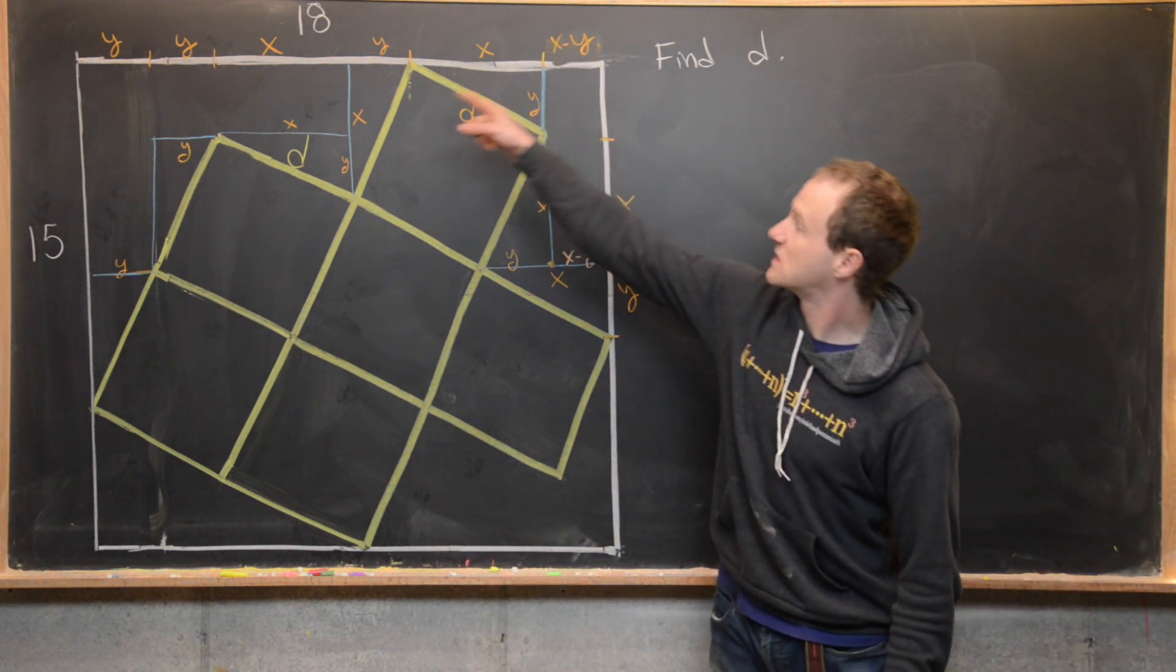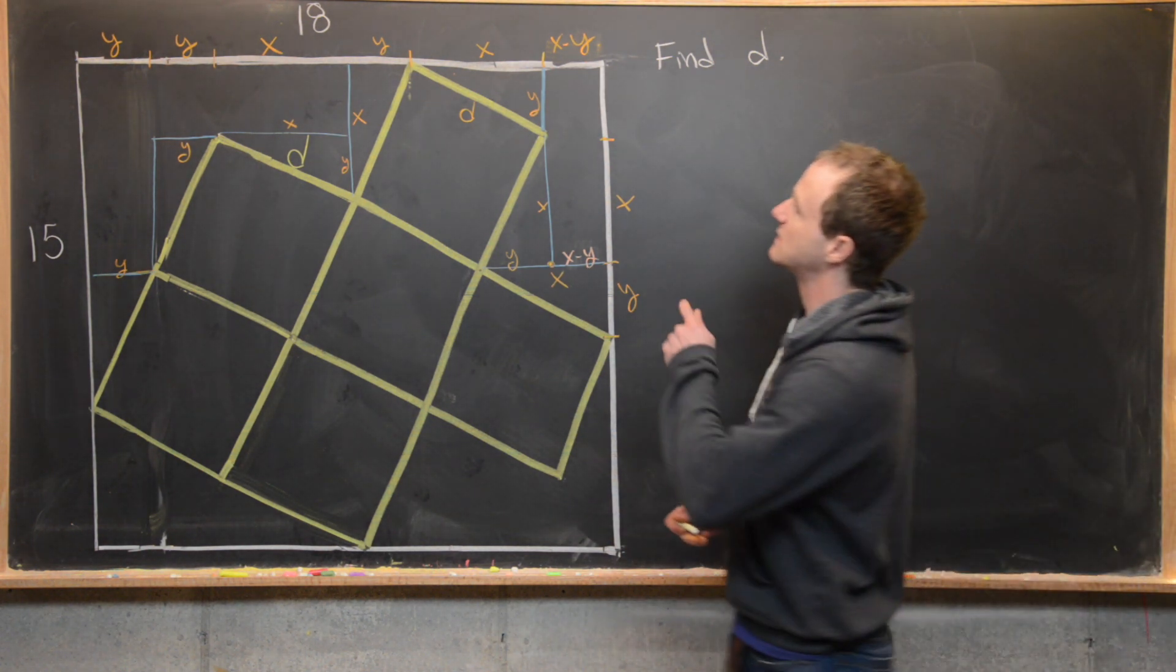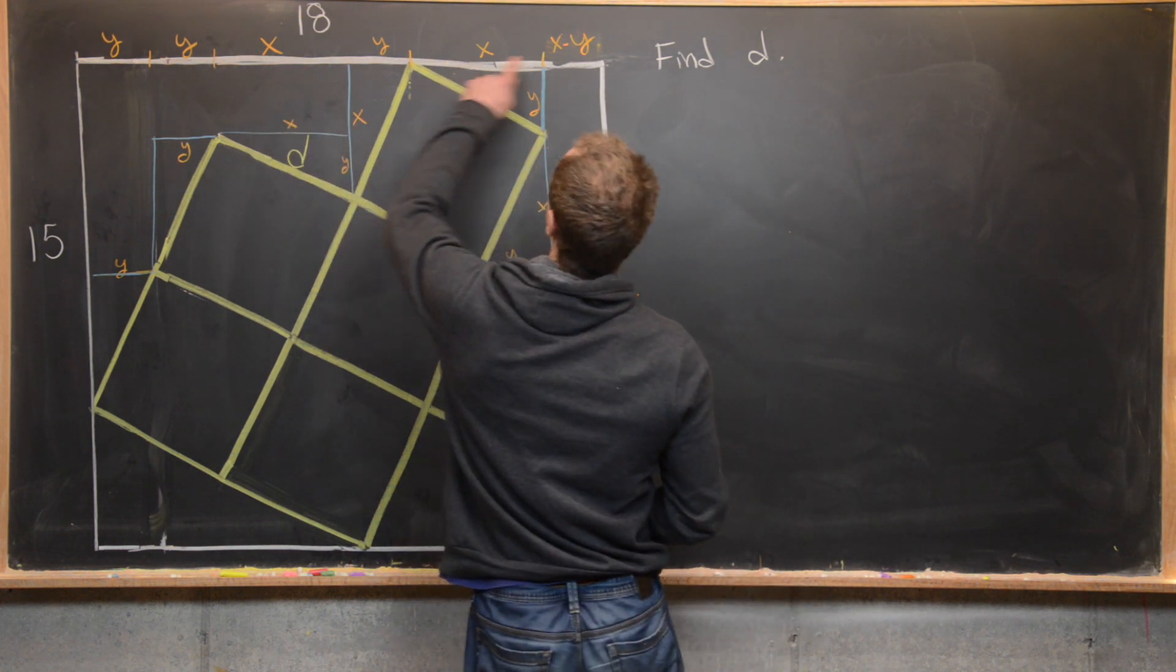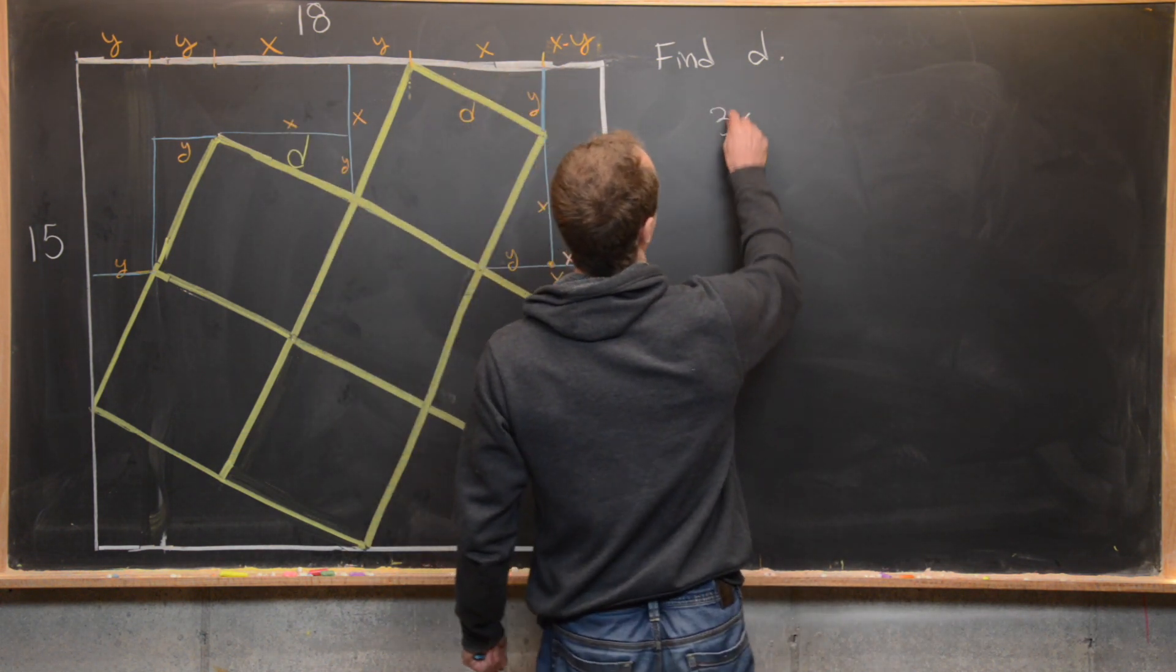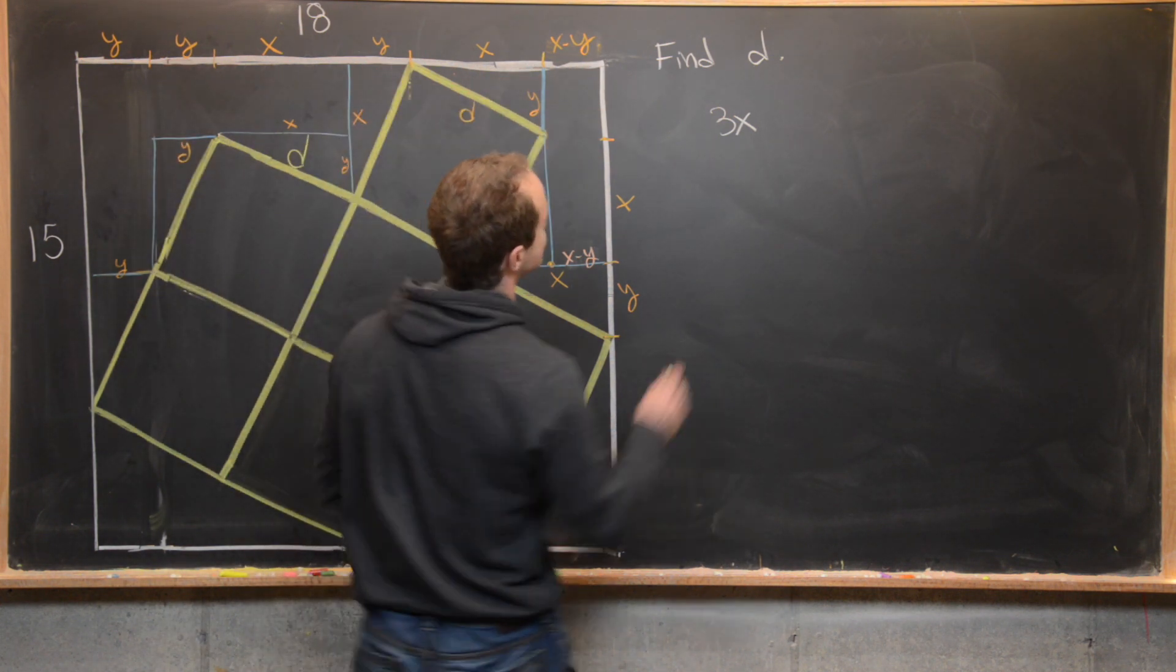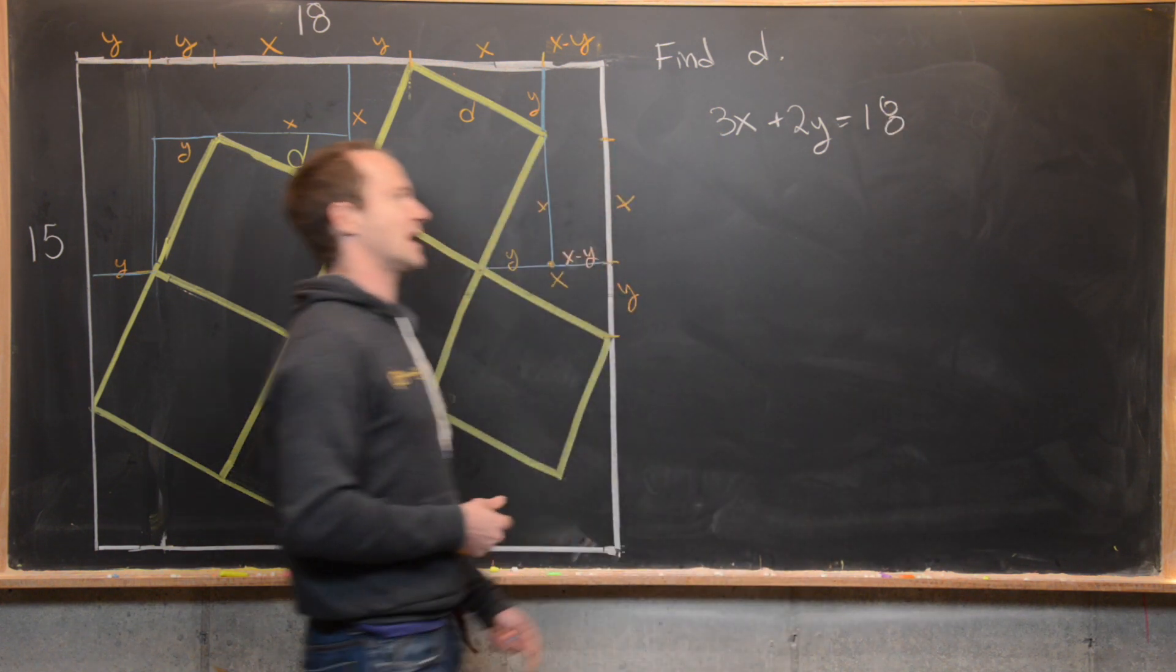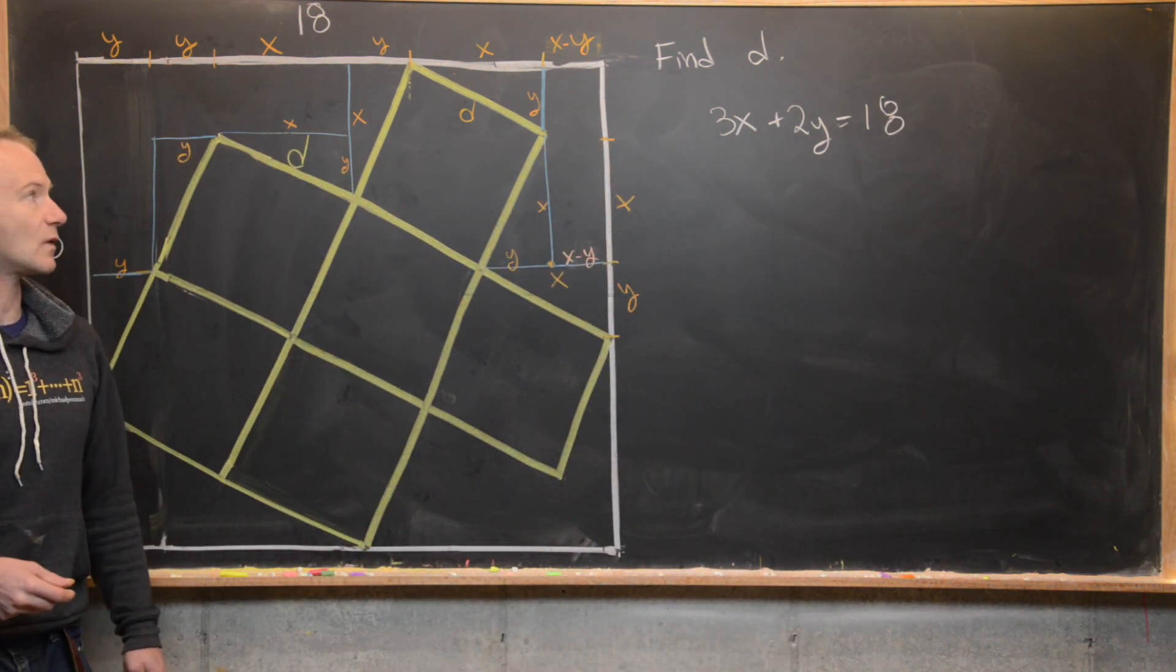But now we can sum all of those little pieces together and notice that we'll get 18. So let's see what we've got. We've got X plus X plus X. So that's going to be 3X. And then we've got Y plus Y plus Y minus Y. So that's going to be plus 2Y equals 18. So there we've got an equation relating X and Y.